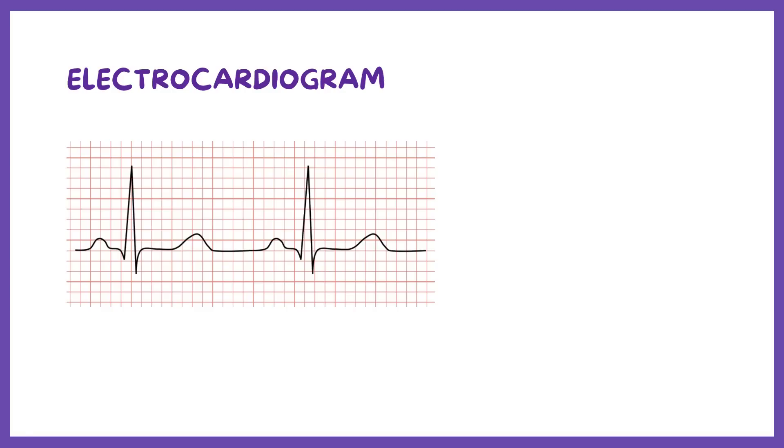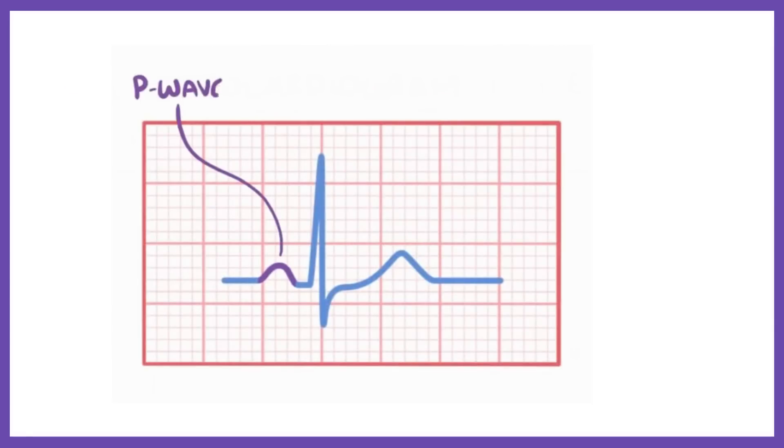An electrocardiogram is also known as an ECG or EKG. In a typical ECG, there's a P-wave, QRS complex, and T-wave.